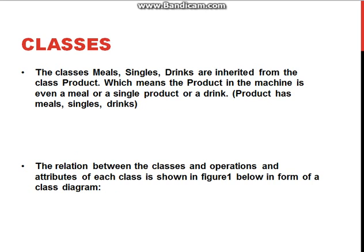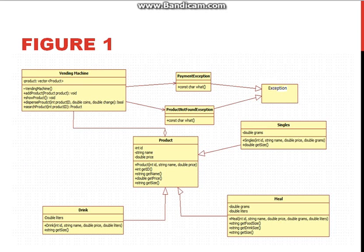The classes meals, singles, and drinks are inherited from the class product, which means that any product in the machine is either a meal, a single product, or a drink. The relations between the classes and the operations and attributes of each class are shown in Figure 1 in the form of a class diagram. All classes have been created to explain our vending machine and contain the needed code and information to run it.